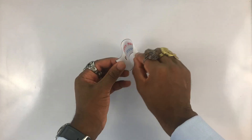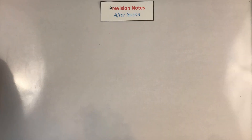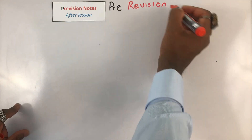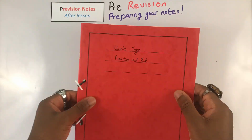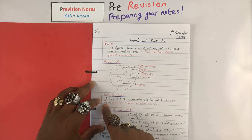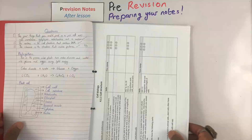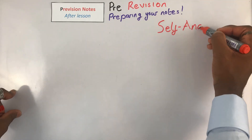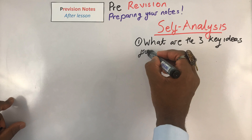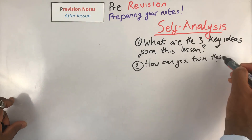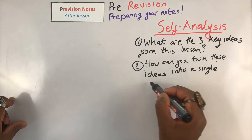I like calling this next bit pre-revision notes, or pre-vision. That's because we're preparing our notes to make revision notes out of them. It's best to do this straight after school, possibly in the library or in a classroom. First thing you do: write a short self-analysis of your learning in that lesson. The purpose of this is for you to get an overall idea that ties all the individual learning points together.